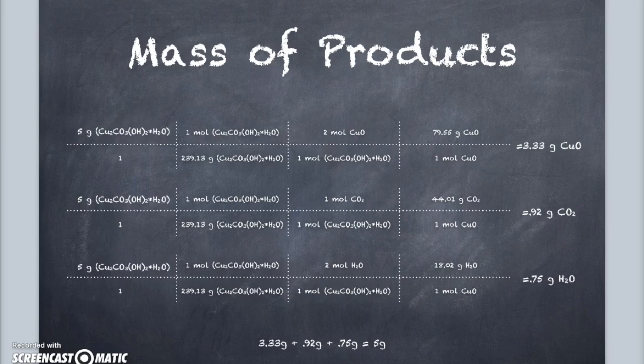We can also calculate the amount of each product we should have after the reaction is completed through stoichiometry, which we can use to confirm the identities of the masses in the experiment. These are the calculations that show the theoretical masses of the products.